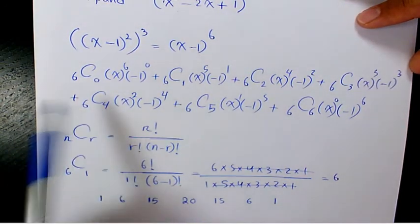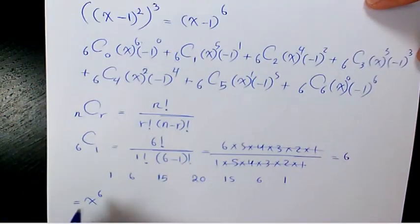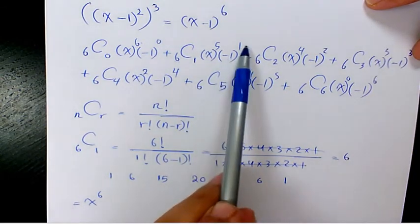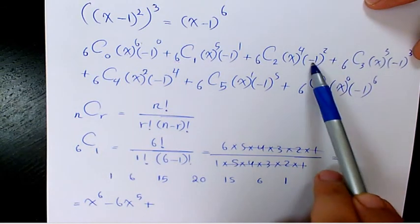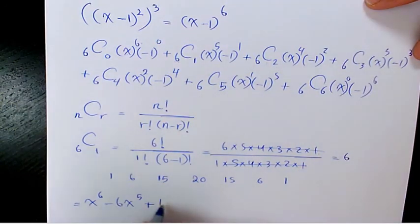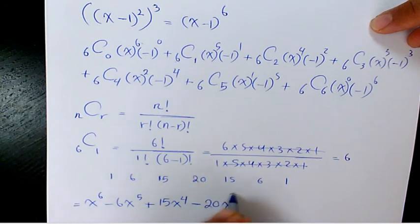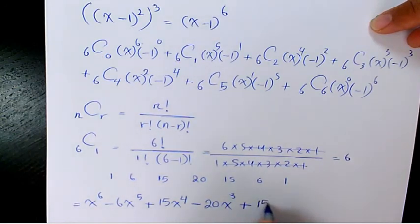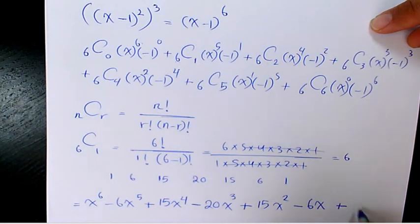1 times x to the power of 6. Negative 1 to the power of 0 is going to be 1. So the answer is going to be x to the power of 6. Next one is negative 1 to the power of 1. So it's going to be negative, negative 6x to the power of 5. Then plus because negative 1 to the power of even number. And here this number is 15. So 15x to the power of 4. Next is going to be negative. Again, so every other time it's going to be negative or positive.